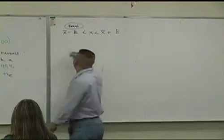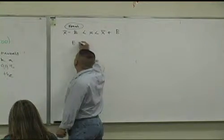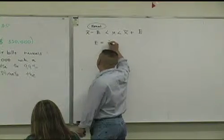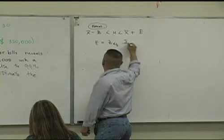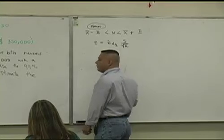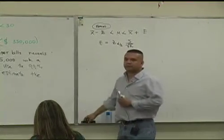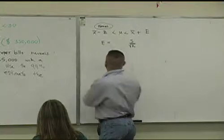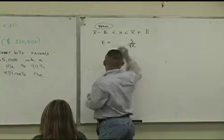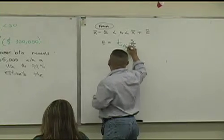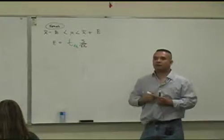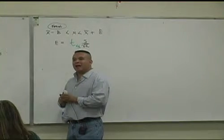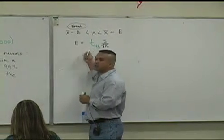Here's some more information. The error formula is defined to be what? All right. We're going to say z alpha over 2, s over square root of n. Okay. However, here's what's going on. Now I'm going to change that z to a what? T. T alpha over 2. This is the only difference. The format is the same. The only difference is that you're going to use the t distribution for a critical value. Okay.